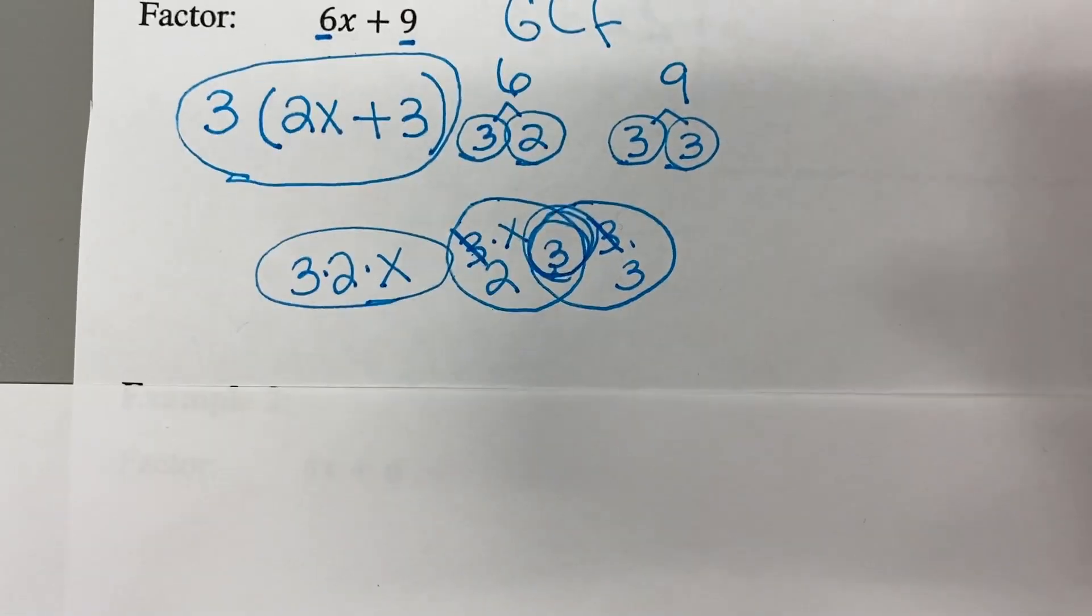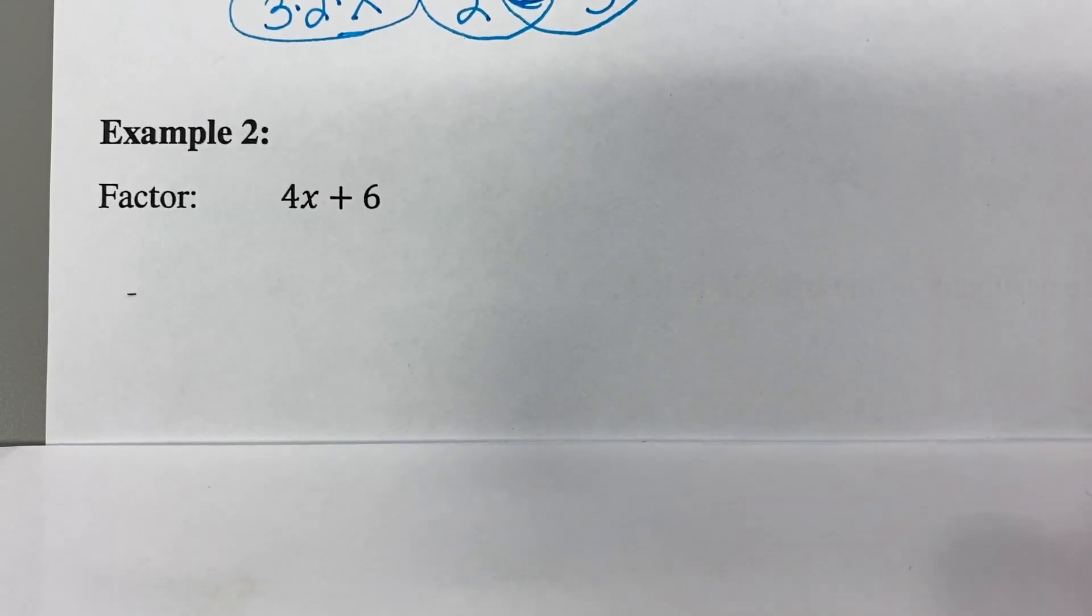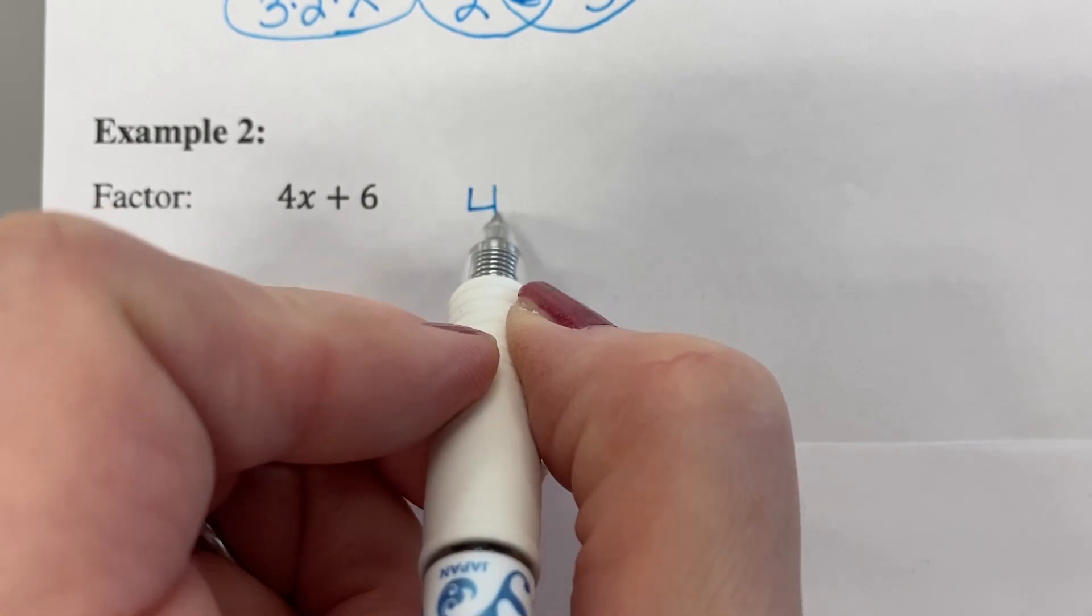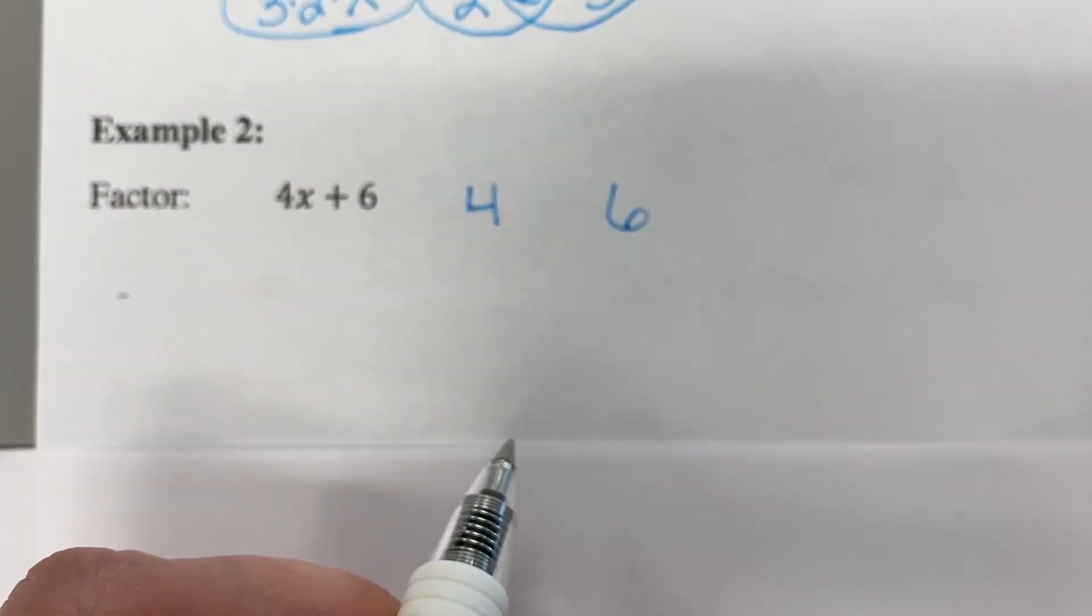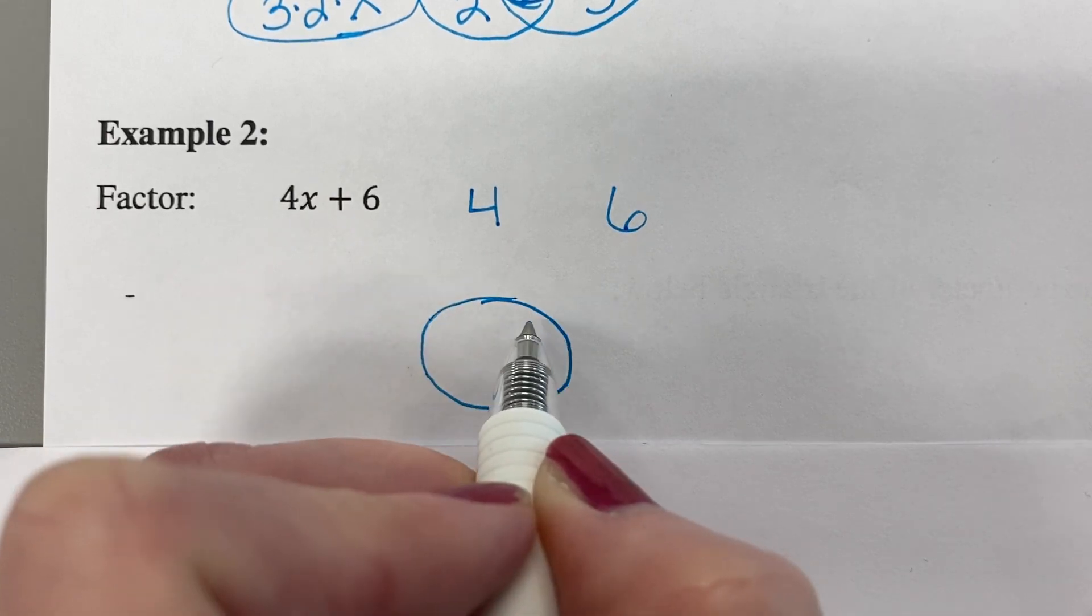Okay, let's look at our next example. Example 2. Factor 4x plus 6. So let's come off to the side. We'll write our 4 and our 6. And we're going to find that greatest common factor here.